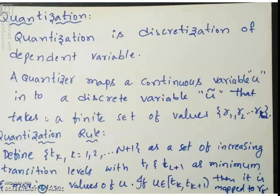Hello everyone, let us move on to image quantization. So what is image quantization? Quantization is discretization of the dependent variable, whereas sampling is discretization of the independent variable.